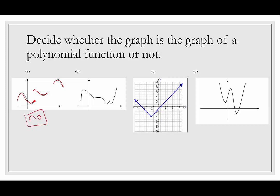Letter b looks continuous — you can draw it without lifting your pencil — however, there are sharp points, which polynomial functions cannot have. So this is not a polynomial function. Letter c is also continuous, but it has a sharp point, so it is also not a polynomial function.